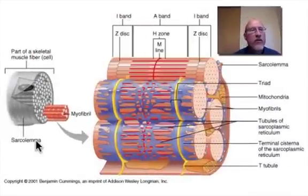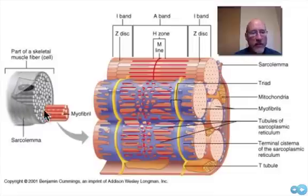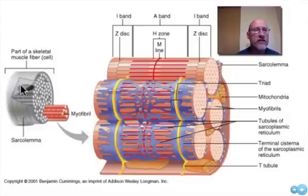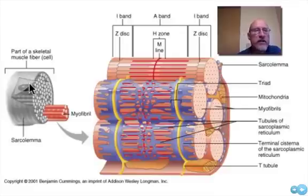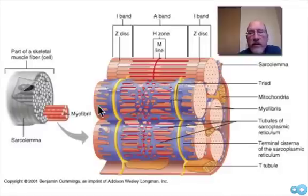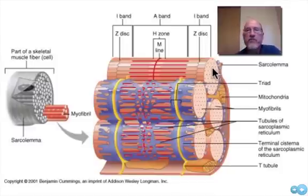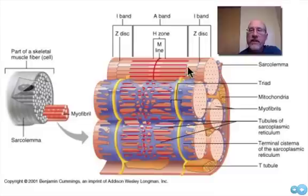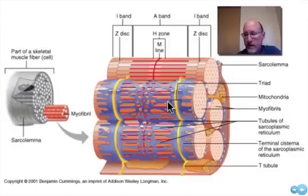Here we have one muscle fiber, or muscle cell. We can identify it by the nucleus and the sarcolemma — the plasma membrane that surrounds it. Inside we can see the subunits of myofibrils, and as we close in we can see that they in turn have subunits: protein filaments — thick filaments and thin filaments. Specifically, thick myosin filaments and thin actin filaments. We'll go into much more detail on those when we cover the sliding filament theory.